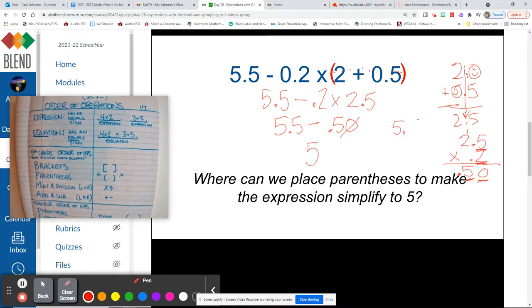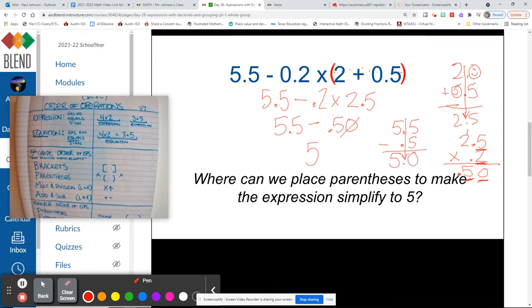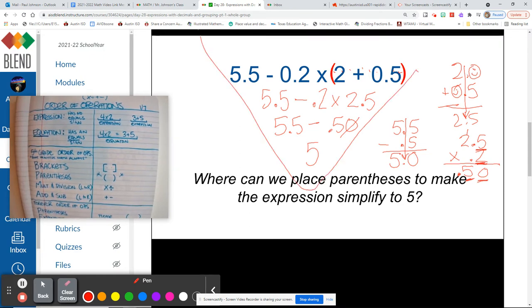Here's the math to that: 5.5 minus 5 tenths is 5, because 5 minus 5 is 0, and 5 minus nothing is 5. Drop that decimal point. So once again, we have simplified our expression, and by putting parentheses around the 2 and the 5 tenths, that allowed us to get the answer 5.